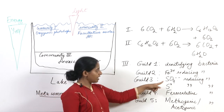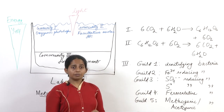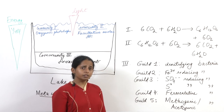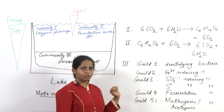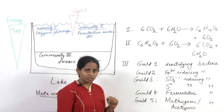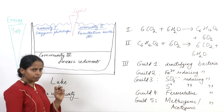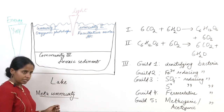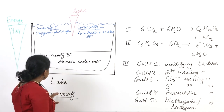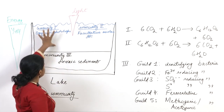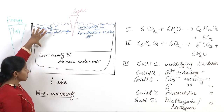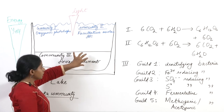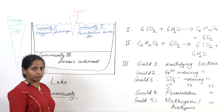A guild is microbes that share the same function — all iron-reducing microbes form one guild, all iron-oxidizing microbes form another. Within a guild there may be many different kinds of bacteria; for example, many different sulfate-reducing bacteria species. A guild may contain a singular population or an entire community, but the unifying factor is shared functional characteristics. Population means one species only. Together, multiple communities make a metacommunity.